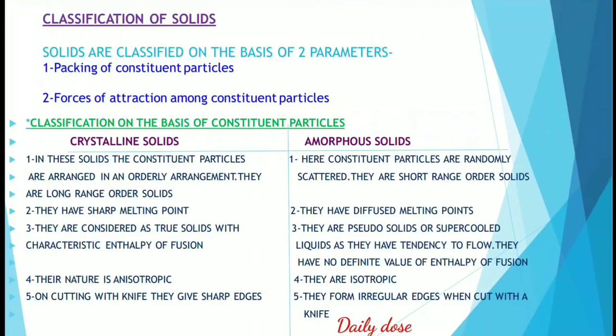In crystalline solids, the constituent particles are arranged in an orderly arrangement. They are also called long-range order solids. In amorphous solids, the constituent particles are not arranged in an orderly manner — they are randomly scattered, so they are known as short-range order solids. Crystalline solids have a sharp melting point, and amorphous solids have a diffuse melting point.